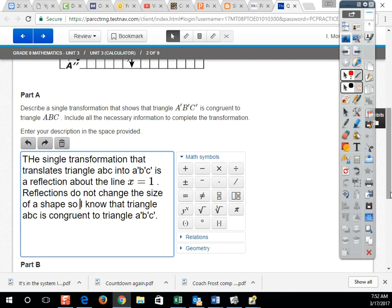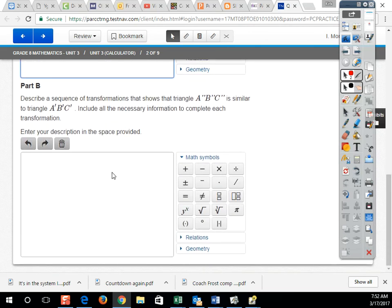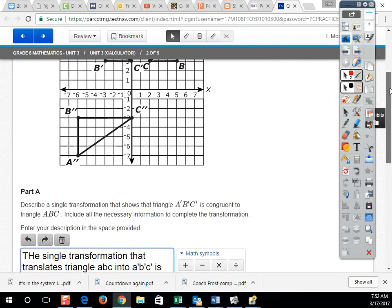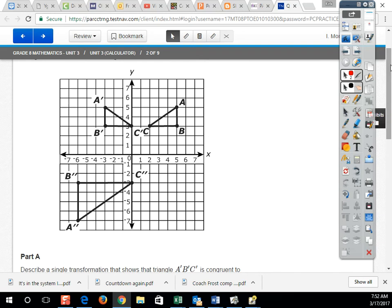Let's go on to problem B. Describe a sequence of transformations that shows that A double prime, B double prime, C double prime is similar to triangle A prime, B prime, C prime. Include all necessary information to complete each transformation. Now, this one is a little more challenging because we have not only a reflection but then a dilation.